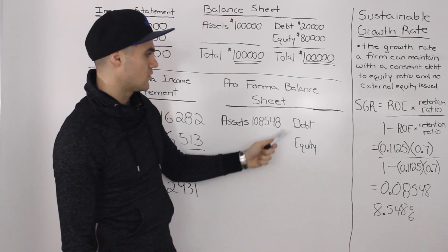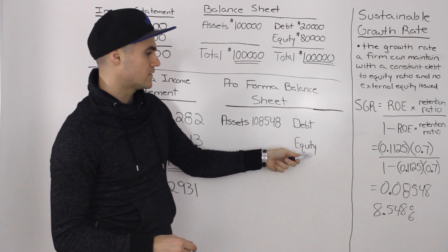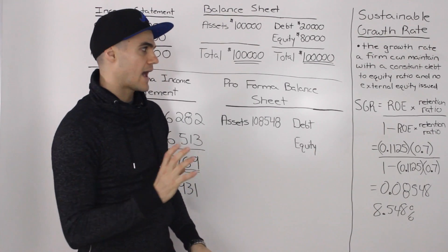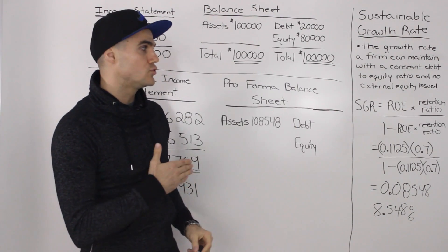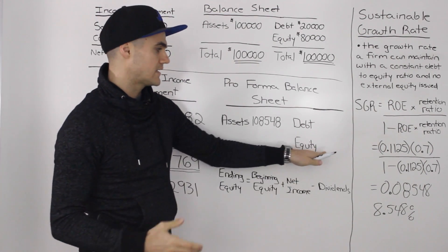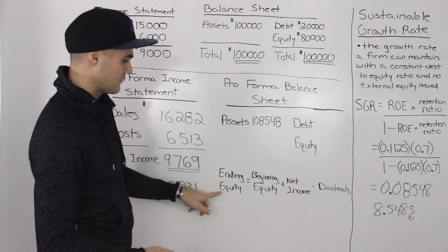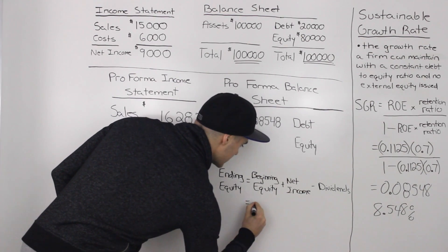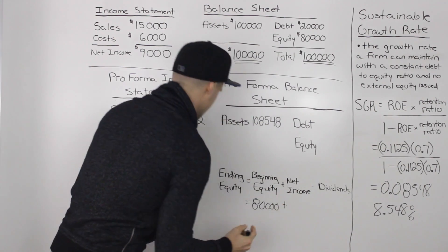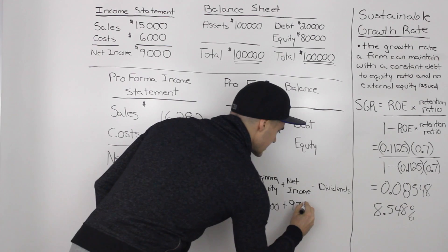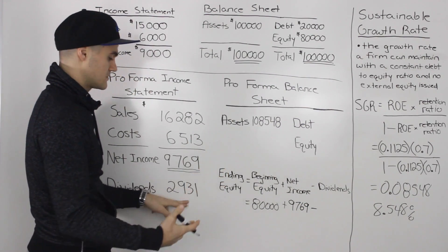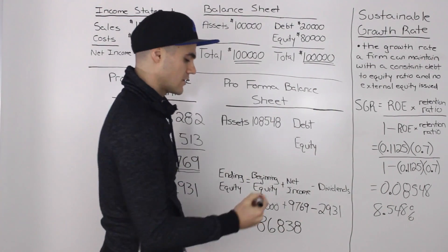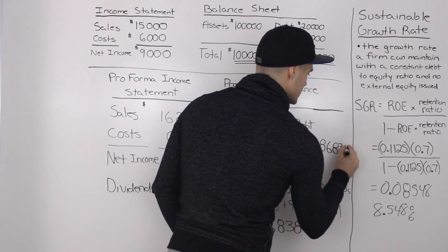Now let's figure out the right side of the balance sheet. The initial goal of this question is to grow the company at a sustainable growth rate, meaning the debt-to-equity ratio has to stay constant and there's no new equity issued. Because no new equity is issued, any increase in equity has to come from retained earnings. We can find the ending equity amount from the formula: beginning equity of $80,000, plus net income of $9,769, minus dividends forecasted to be paid of $2,931, giving a final equity amount of $86,838.